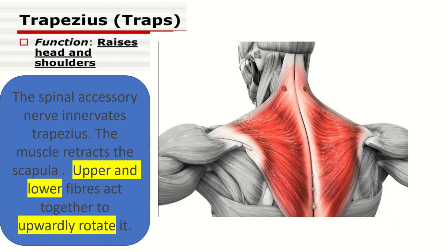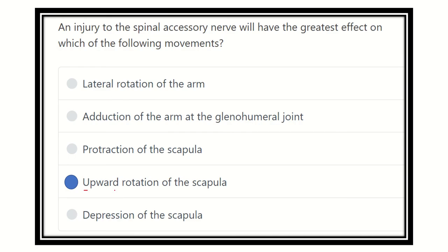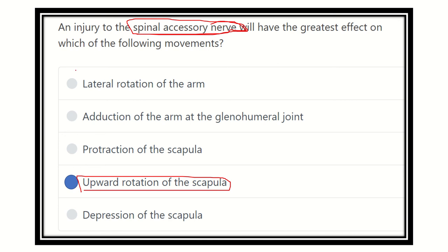The trapezius muscle causes retraction and rotation of the scapula. The upper and lower fibers together upwardly rotate the scapula. So our final answer is upward rotation of the scapula, which is performed by the trapezius muscle, supplied by the spinal accessory nerve.